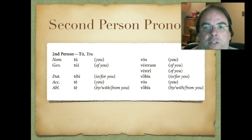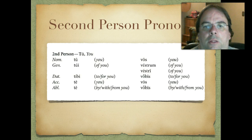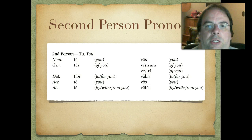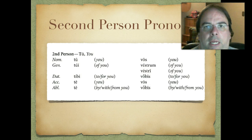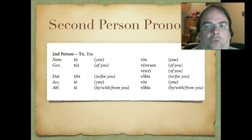When we move to the plurals, you see we have totally separate forms. Vos, you. Then again in the genitive we have two potential forms: vestrum or vestri, both translated of you. Then vobis, to or for you. Accusative plural, vos, you. And ablative plural, vobis, by, with, or from you. So: tu, tui, tibi, te, te in the singular. Plural: vos, vestrum or vestri, vobis, vos, vobis. Remember in Latin that V is pronounced like a W.